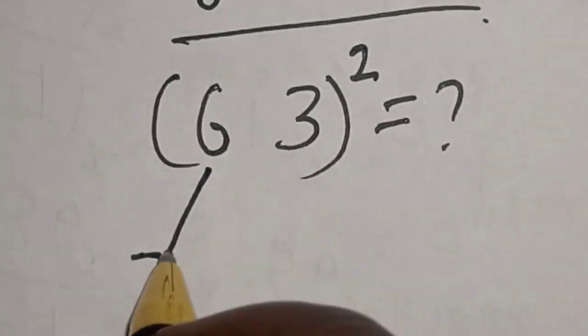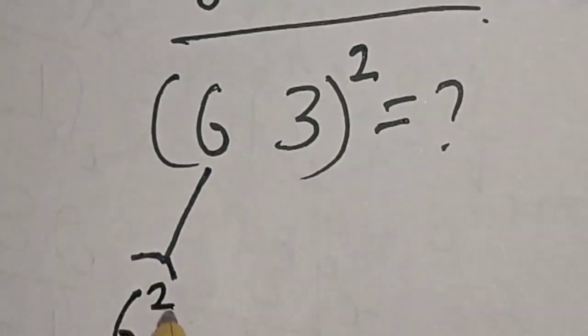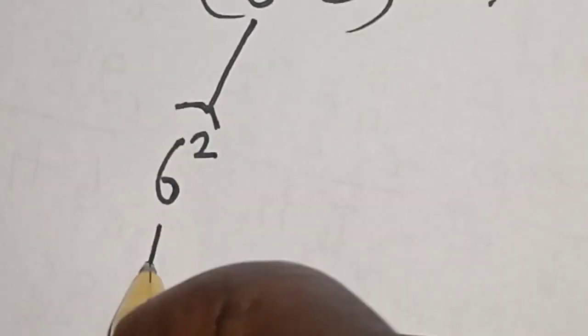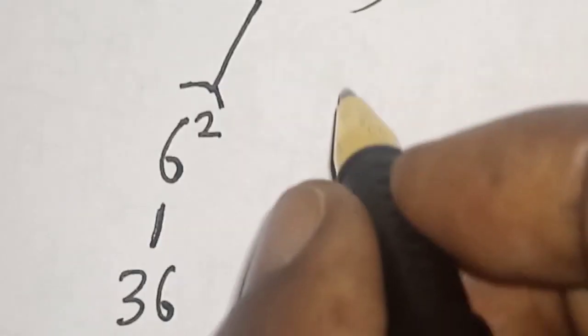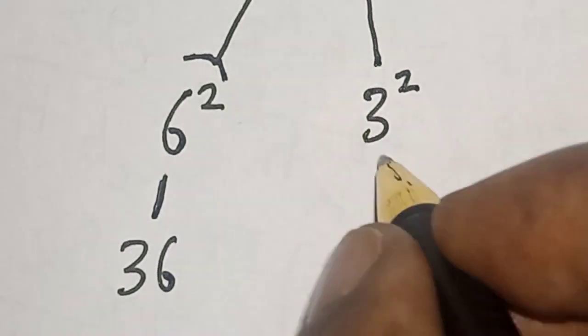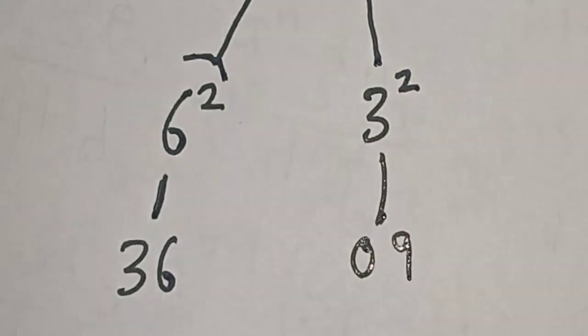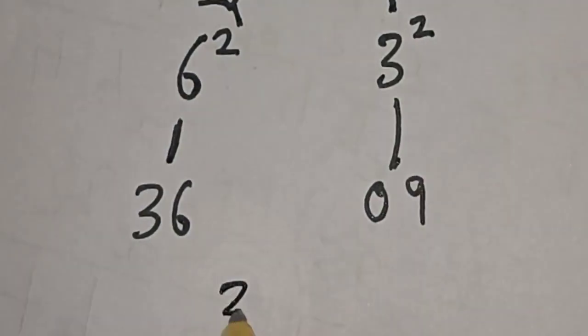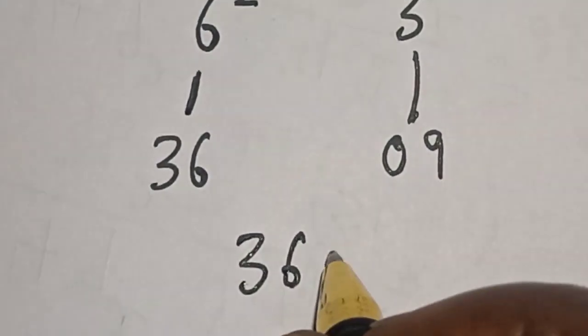Let's say 6 squared, this is 6 squared. Then this is equal to 36. And here is 3 squared, this is 09. Now we have this and this.